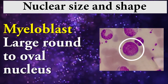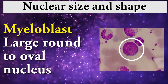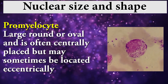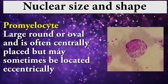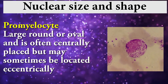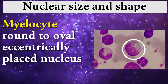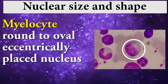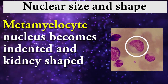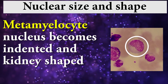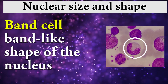Third one is nucleus size and shape. Myeloblast: large round to oval nucleus. Promyelocyte: large round and oval, often centrally placed but may sometimes be located eccentrically. Myelocyte: round to oval eccentrically placed nucleus. Metamyelocyte: nucleus becomes indented and kidney-shaped. Band cell: band-like shape of the nucleus.